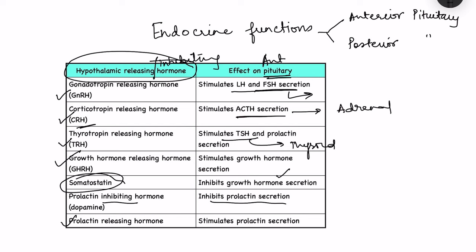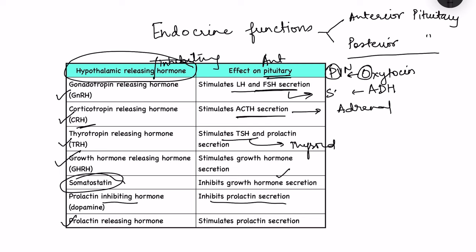For the posterior pituitary, the hormones are actually synthesized in the hypothalamus itself. Oxytocin and antidiuretic hormone (ADH/vasopressin) are synthesized in hypothalamic neurons. Oxytocin is synthesized mainly in the paraventricular nucleus and ADH mainly in the supraoptic nucleus. The axons of these neurons extend into the posterior pituitary, where the hormones are released. Oxytocin is important for uterine contractility and milk ejection; ADH is important for water balance.